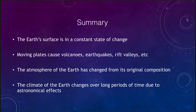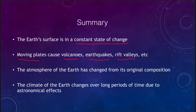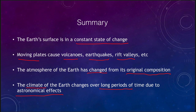To summarize: the Earth's surface is in a constant state of change — the continents today are not what they were hundreds of millions of years ago and won't be the same hundreds of millions of years from now. These moving plates cause volcanoes, earthquakes, and rift valleys. The atmosphere of the Earth has changed from its original composition, and the long-term climate changes over vast periods due to astronomical effects — the tilt of the Earth's axis and the shape of its orbit. That concludes our lecture on the surface and atmosphere of the Earth. We'll be back for another topic in astronomy — have a great day everyone, and I will see you in class.